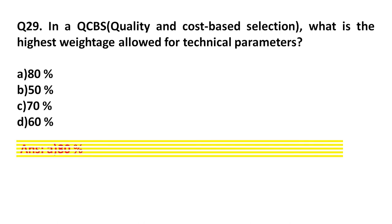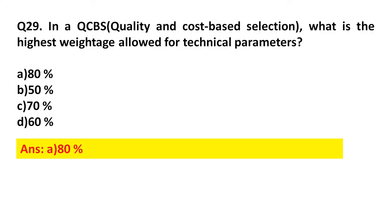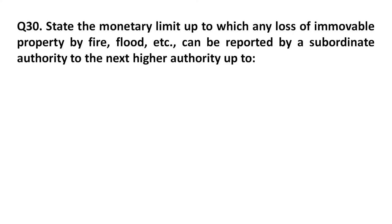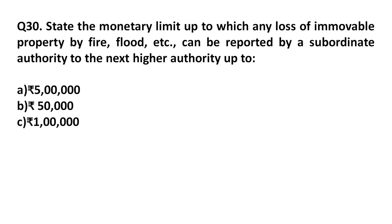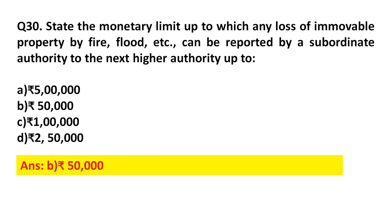Answer to Question 29: Option A, 80 percent. Question 30: State the monetary limit after which any loss of immovable property by fire, flood, or other natural calamity can be reported by a subordinate authority to the next higher authority. Option A: 5 lakhs. Option B: 50,000. Option C: 1 lakh. Option D: 2 lakh 50,000. Answer: Option B, 50,000.